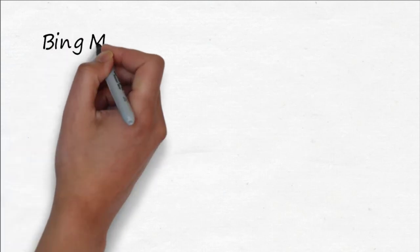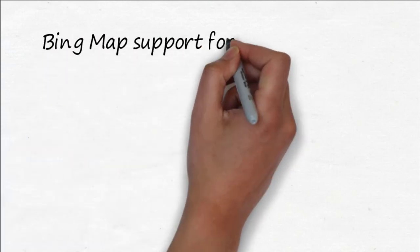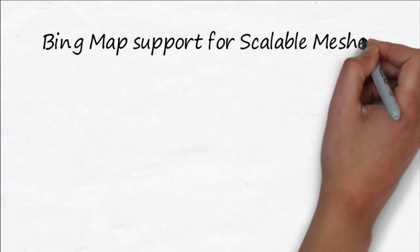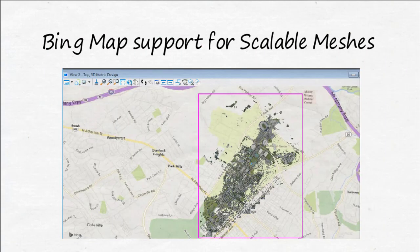Scalable mesh files can now be textured with Bing Maps. The GCS information is embedded in the 3AC file itself.